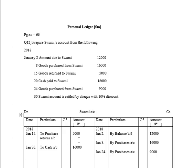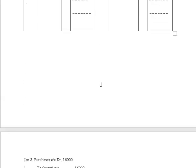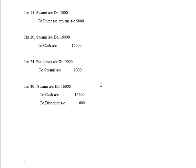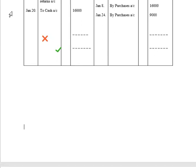The next transaction: January 20th, cash paid to Swami, 16,000 rupees. We are paying cash to Swami, so the journal entry will be: Swami Account Debit to Cash Account. As we are preparing Swami Account, we write the name of Cash. Cash is on the credit side of the journal entry, so at the time of posting into the ledger it will be recorded on the debit side as: 2018 January 20th, To Cash Account, 16,000 rupees.